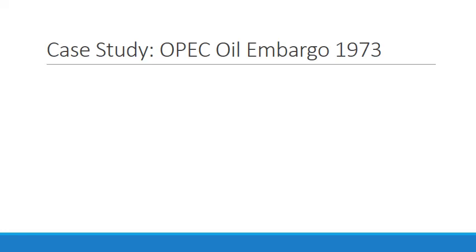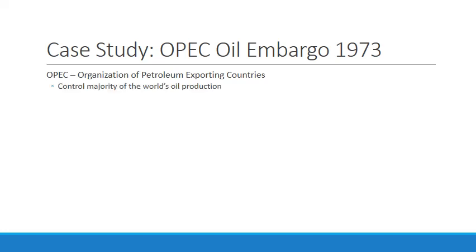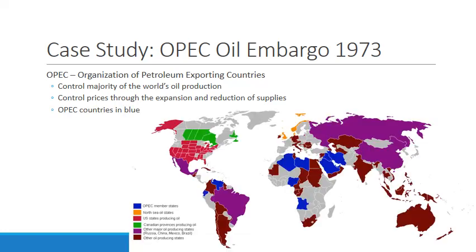Let's look at a price ceiling in action using the OPEC oil embargo of 1973 as our case study. OPEC stands for the Organization of Petroleum Exporting Countries — they control the majority of the world's oil production and control prices through the expansion and reduction of supplies. The OPEC countries are shown in blue, including many in Africa, the Middle East, and a couple in South America.